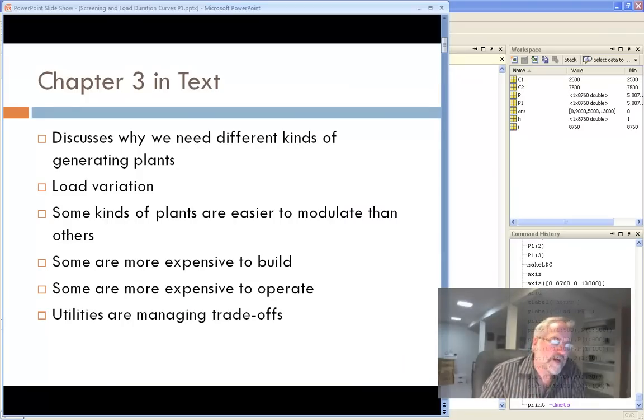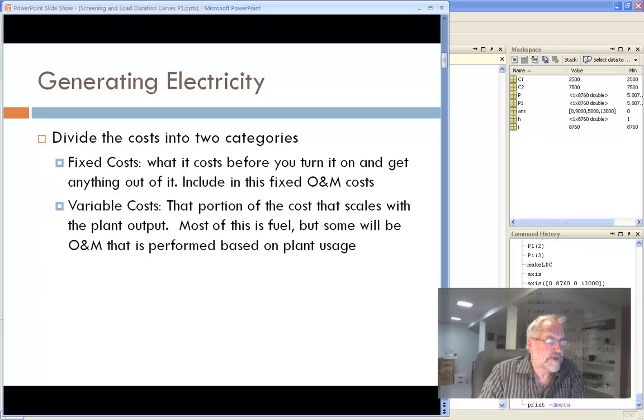So in chapter three, we talked about different kinds of electric generating plants. We talked about the need for that and the fact that the load varies hour by hour, day by day. There's seasonal cycles, there's daily cycles. And different plants, different kinds of technology, have different pluses and minuses, meaning different kinds of loads. Some are more expensive to build up front, but cheaper to operate. Some are cheaper to build up front, but more expensive to operate. And so we want to look at tools that will help us explore these tradeoffs.